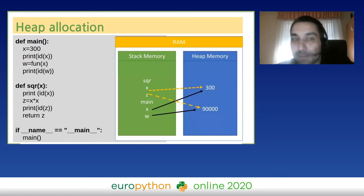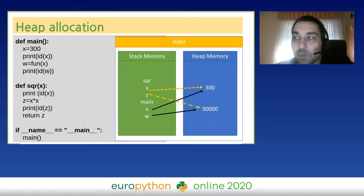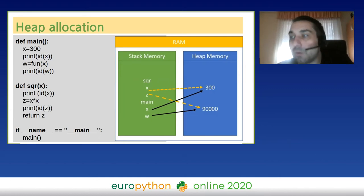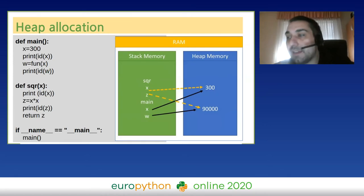In this example, under the main method, an object with value 300 has been referenced with the name X, and there is another function that returns the square value. In both functions, the X object is referencing the same memory location. When the square method returns, the reference object is no longer in scope, so the reference count drops to zero and the return value is assigned to the double variable. We will review reference counting in more detail later.